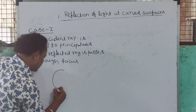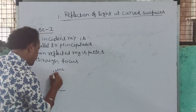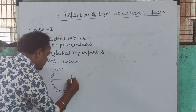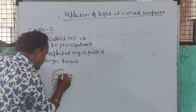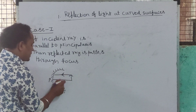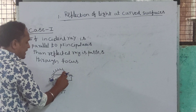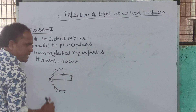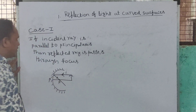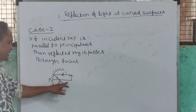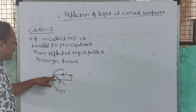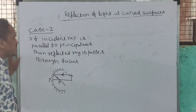In the diagram, here is the concave mirror, here is the object, here is the incident ray. The incident ray is parallel to the principal axis. After striking the mirror, the reflected ray passes through the focus. If the incident ray is parallel to the principal axis, then the reflected ray passes through the focus. This is case 1.